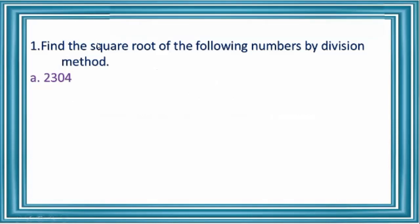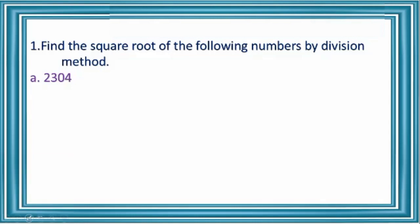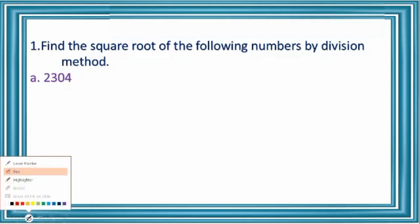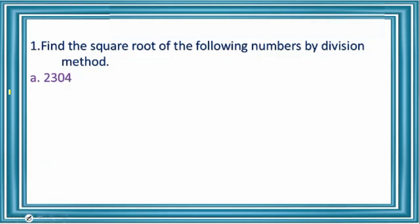Find the square root of the following numbers by division method. The first number is 2304.